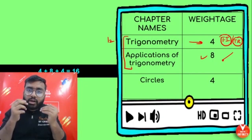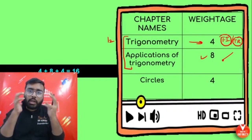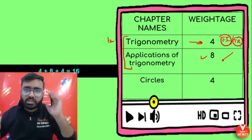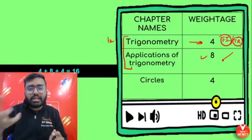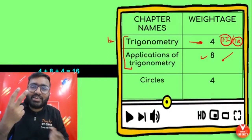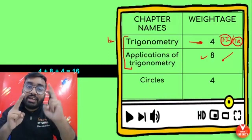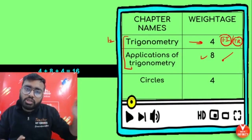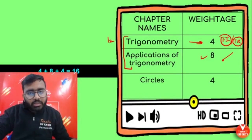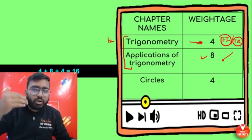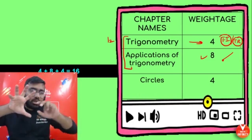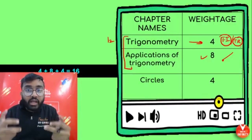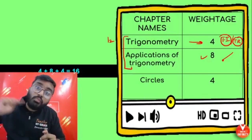For Circles, there are two important theorems. The first theorem: the radius and tangent are perpendicular to one another. The second theorem: from an external point, the two tangents are equal. It's also possible that a 4-mark question comes which uses both theorems together.